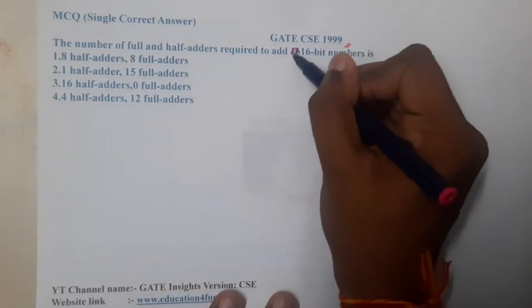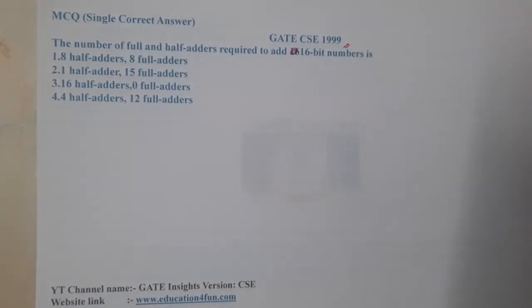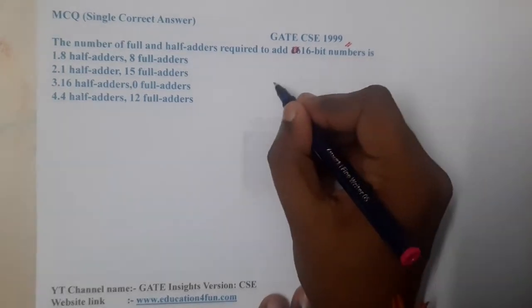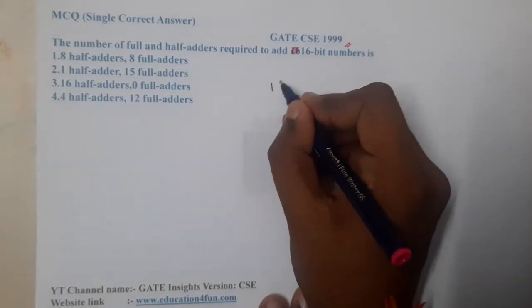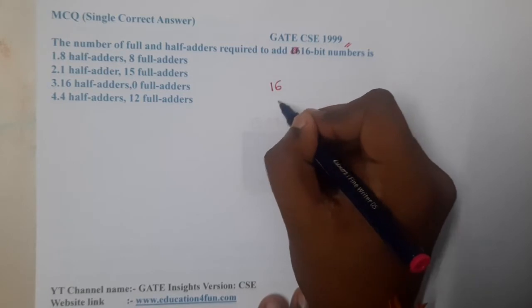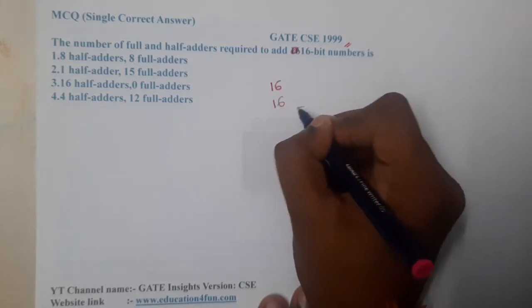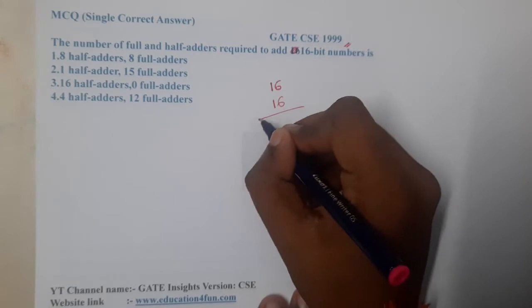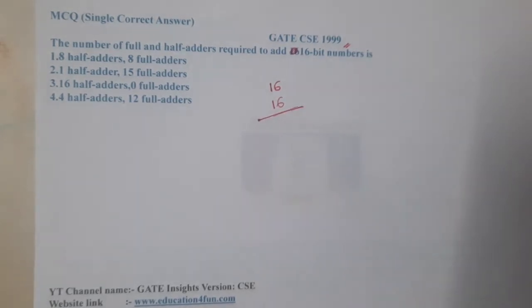Okay, so we are having a total of 16 bits, and we want to add them with one more 16-bit number. Whenever we want to add two numbers, if you recall, we learned about half adder and full adder.